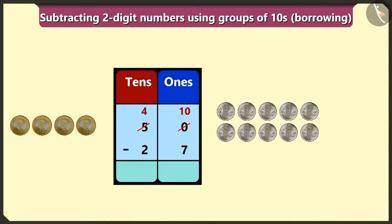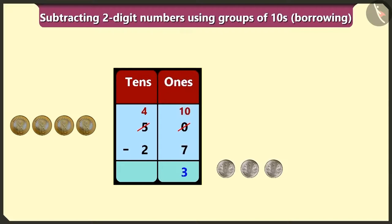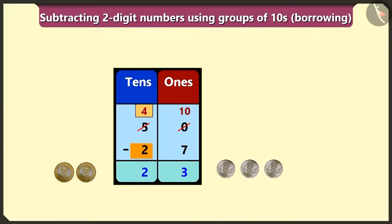Now, first of all, if we subtract seven ones from ten ones in the place of ones, then we will have one, two and three left. Now, if we subtract two tens from four tens in the box of tens, we will get two tens. In this way, after subtracting twenty-seven rupees from fifty rupees, the milk seller uncle will return us two tens and three ones — means twenty-three rupees.